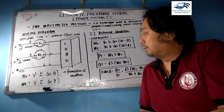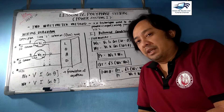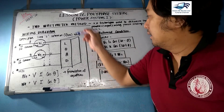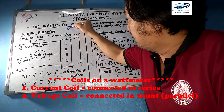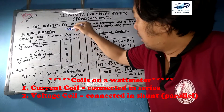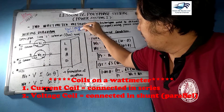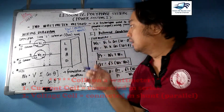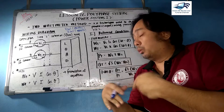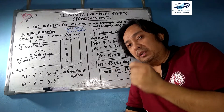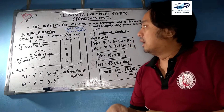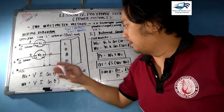Before proceeding, we need a brief review of the wiring diagram of a 2 wattmeter method. A wattmeter has two coils: the voltage coil, which is always connected in parallel, and the current coil, which is connected in series. To compute power, we need the angle theta — the difference between the voltage and current angles, as described in AC circuits.